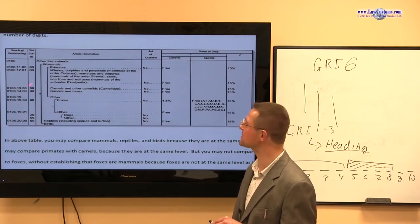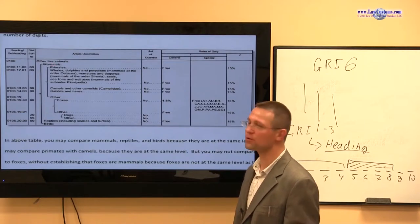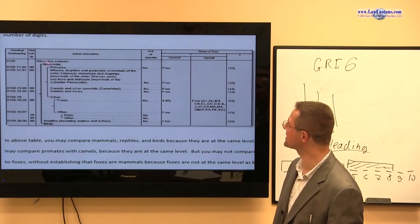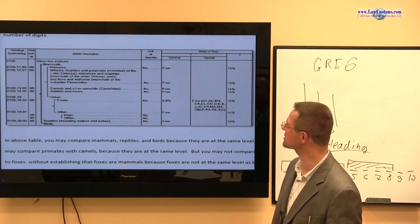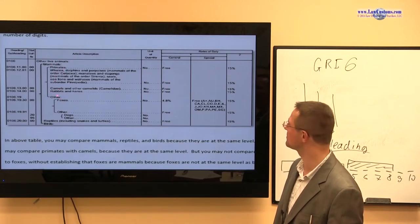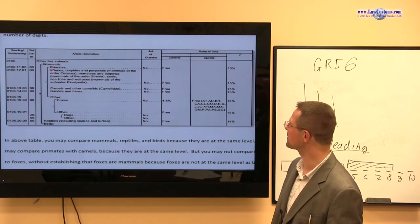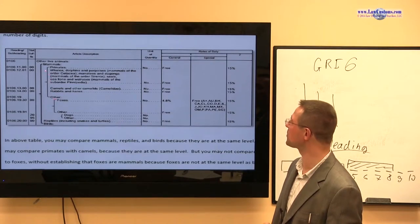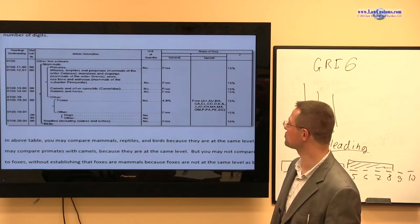Once we figure out, let's say it's a mammal, our next question will be at the same level subheading. We go to the next level. The next level deals with the question, is it a primate or is it not a primate, meaning other. So we know it's a mammal, yes. We know it's, let's say, it's not a primate.